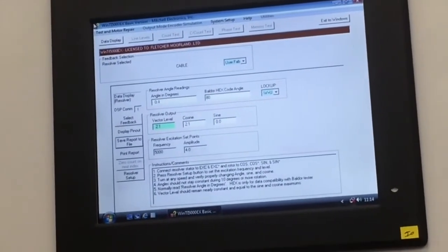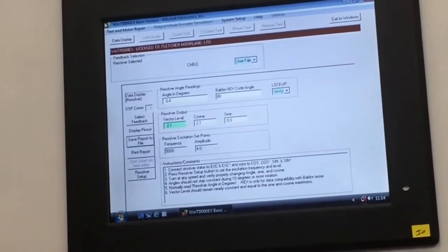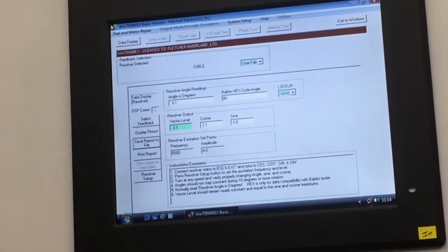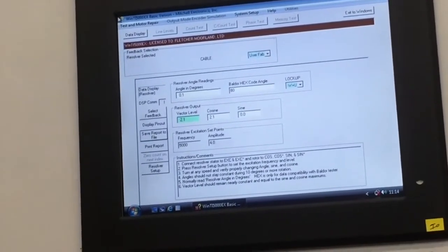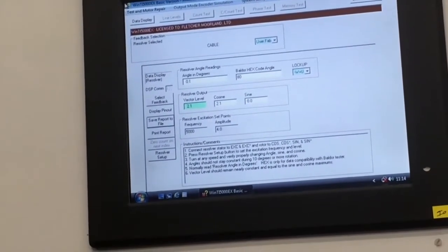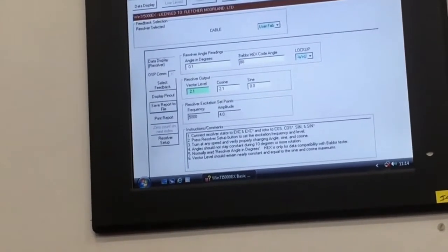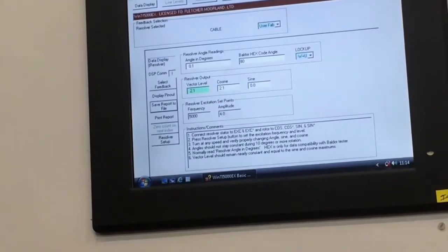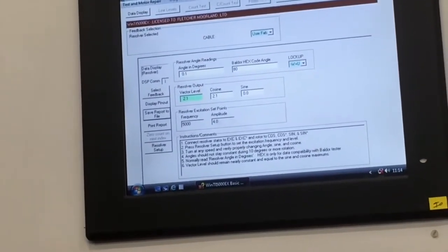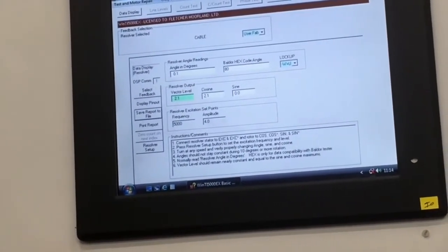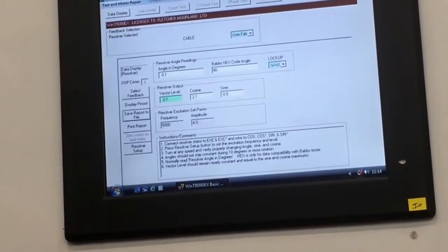The software position here is now showing zero angle degrees and we can also see that the vector level for this motor has now been corrected by putting a new resolver in. And once we are happy with this, we will do a few revolutions to make sure everything is correct. We are getting the right angle, we are getting the right voltage amplitude out, and then we will set the drive together with the motor and perform the load test.